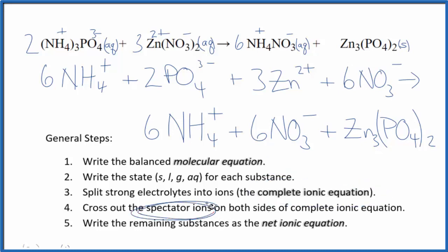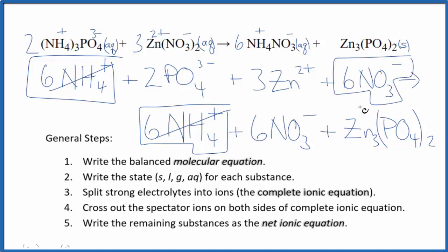Now we can cross out the spectator ions. They're on both sides, in the reactants and in the products. I see I have 6 ammonium ions in the reactants and in the products. Get rid of that. I see 6 of these nitrate ions here and again in the products. So I can get rid of those. What's left, that's the net ionic equation for ammonium phosphate plus zinc nitrate.